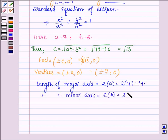The eccentricity, denoted by e, is given by c/a = √13/7.